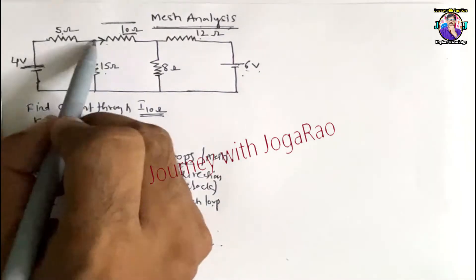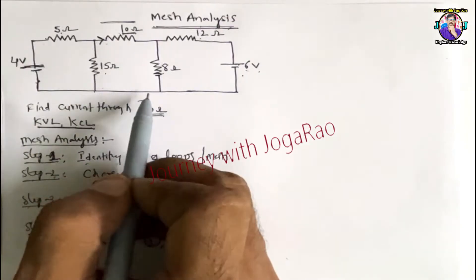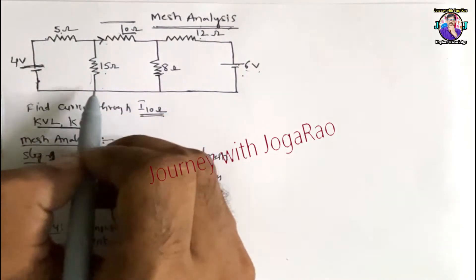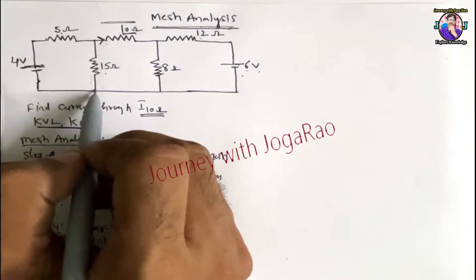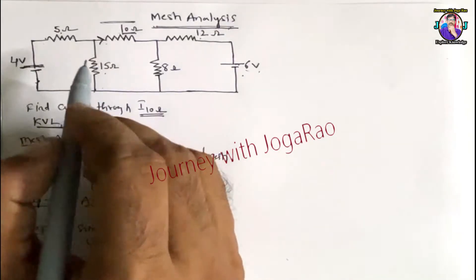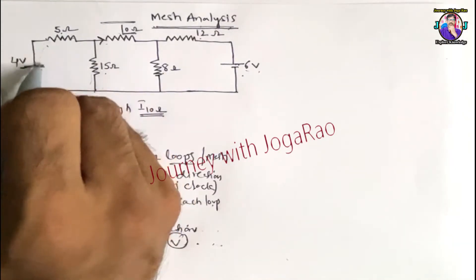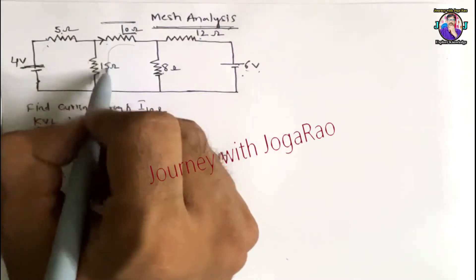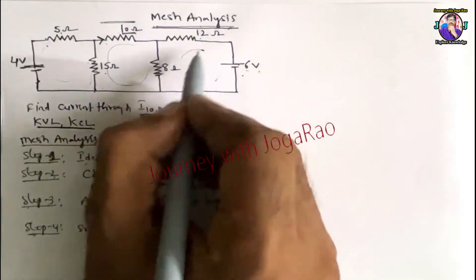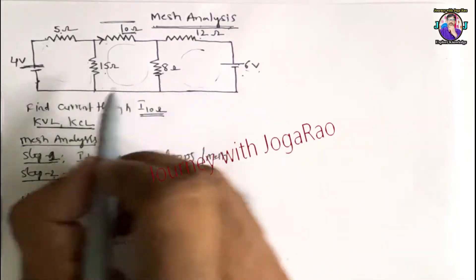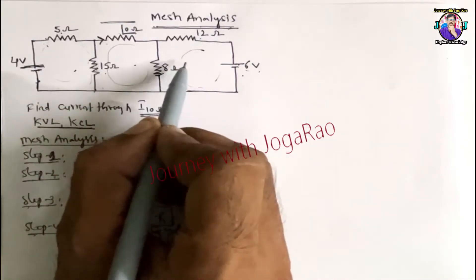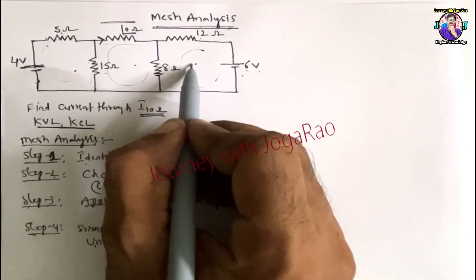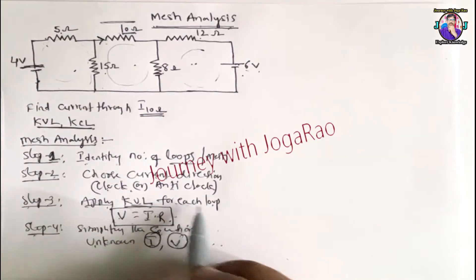If we observe the same circuit, how many loops are there? Looking at the closed circuits: this is a loop, this is a loop, this is a loop, and this is a loop. So the number of loops is 1, 2, and 3 — there are 3 loops, which means 3 equations.